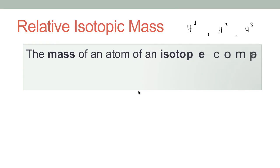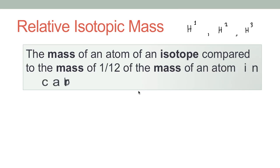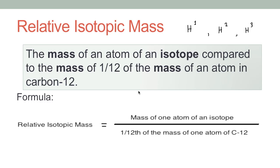The definition is almost the same as before: the mass of an atom of an isotope compared to the mass of one twelfth of the mass of an atom of carbon-12. The formula is: relative isotopic mass equals the mass of one atom of an isotope divided by one twelfth of the mass of one atom of C12.